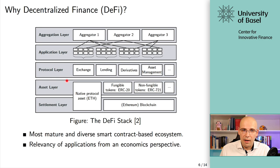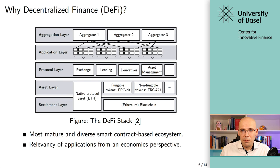Then on top of the settlement layer you have the asset layer, where you're creating tokens — a representation of value and assets on the blockchain. On top of that you have the protocols: things like exchanges, lending markets, derivatives, asset management — also deployed on the settlement layer and making use of these assets. And then on top of these protocols you have some applications and aggregation platforms, basically nice front ends that interact with various protocols. What's super exciting about DeFi is that with this layered approach you can create something completely transparent, open, and interoperable that recreates most financial services offered today in a centralized way.